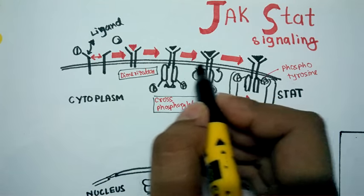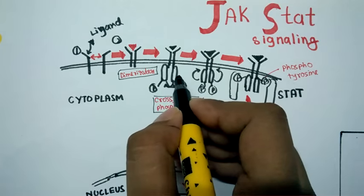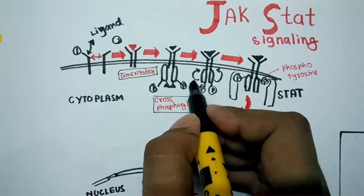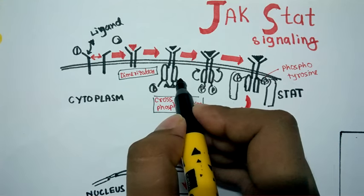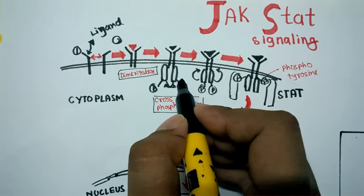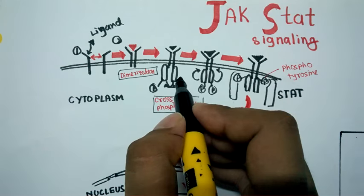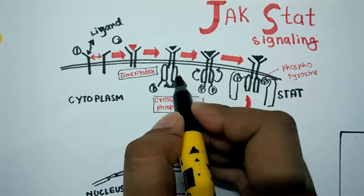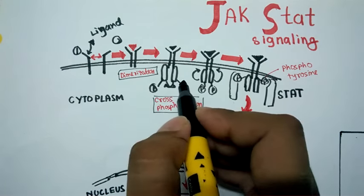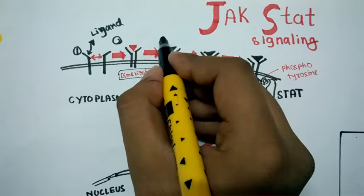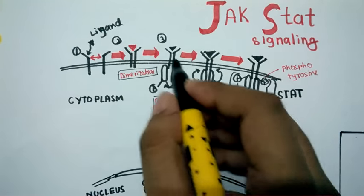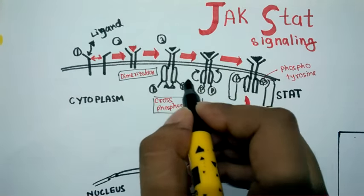After dimerizing of the receptor, JAK kinase gets associated with the C-terminal domain of the receptor. This JAK kinase is not an intrinsic tyrosine kinase; JAK kinase is an extrinsic tyrosine kinase, so it is normally not an integral part of the cytosolic domain of this receptor.